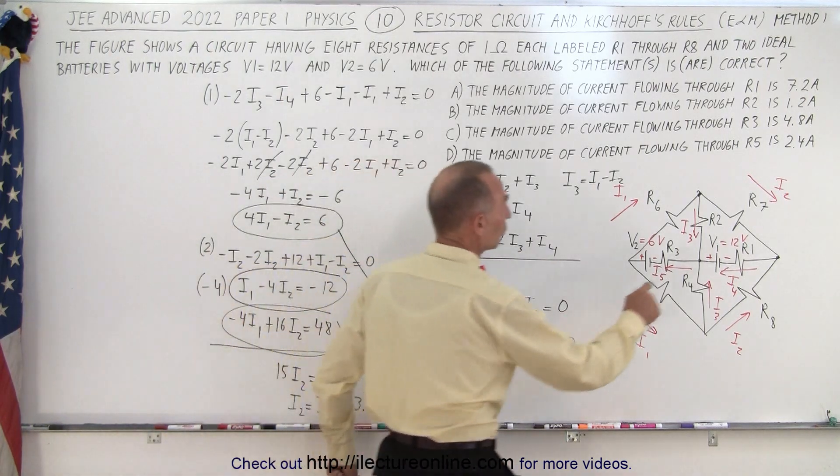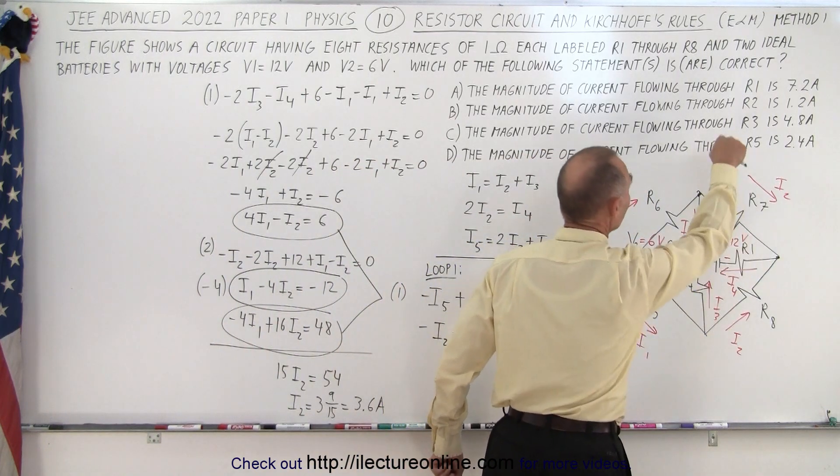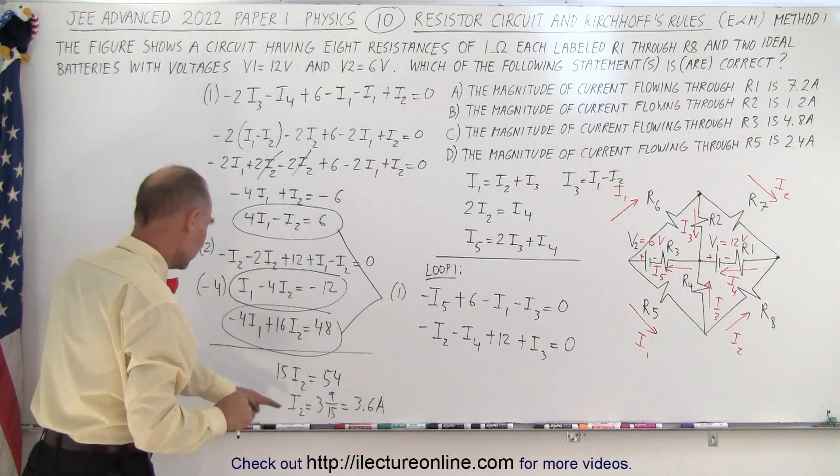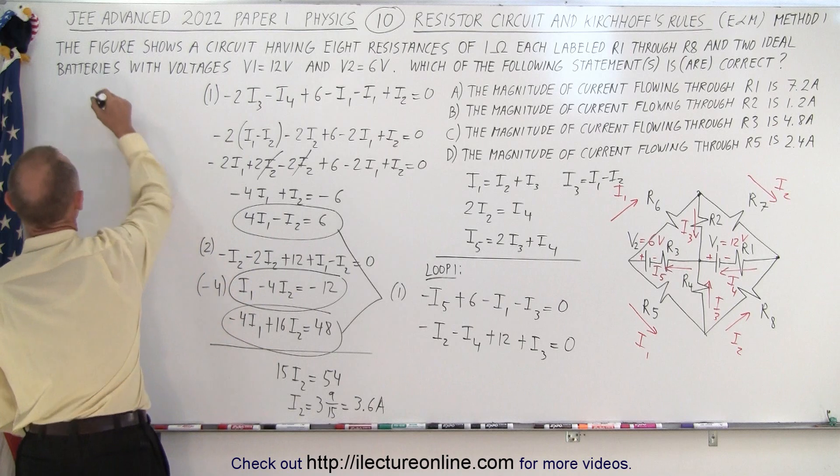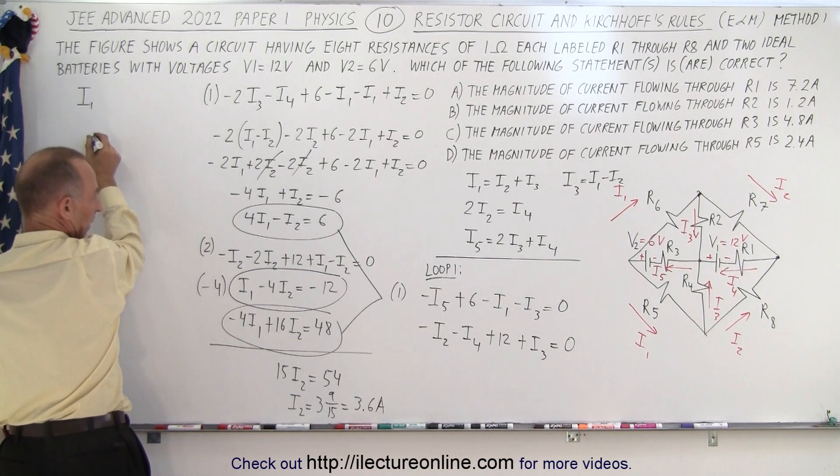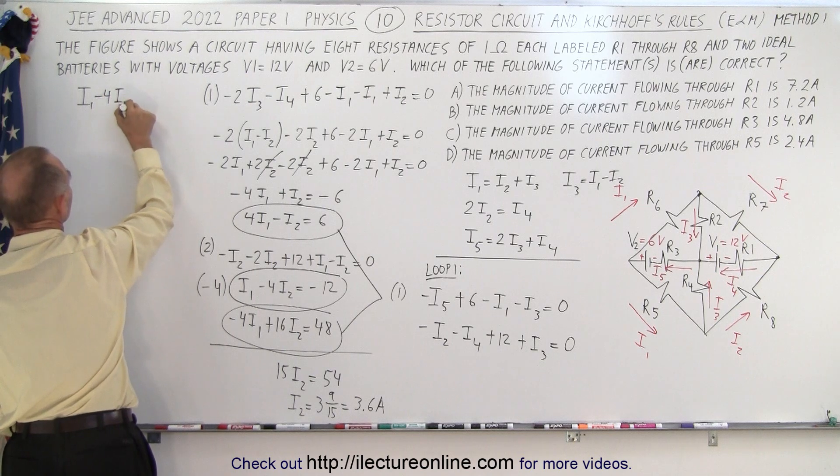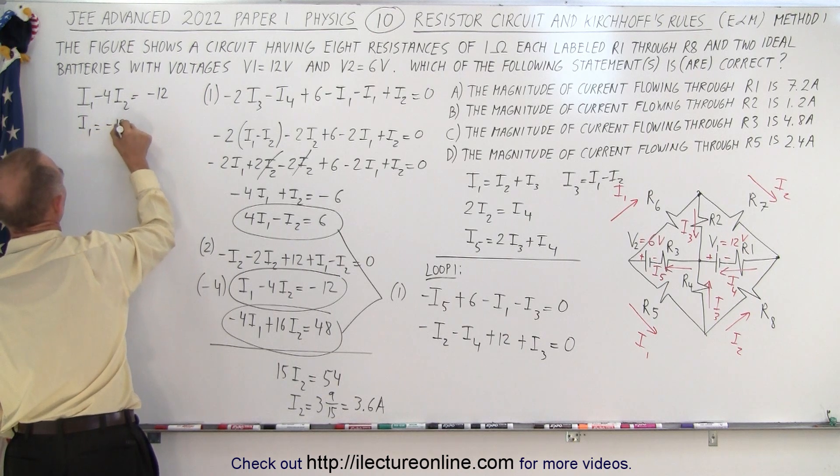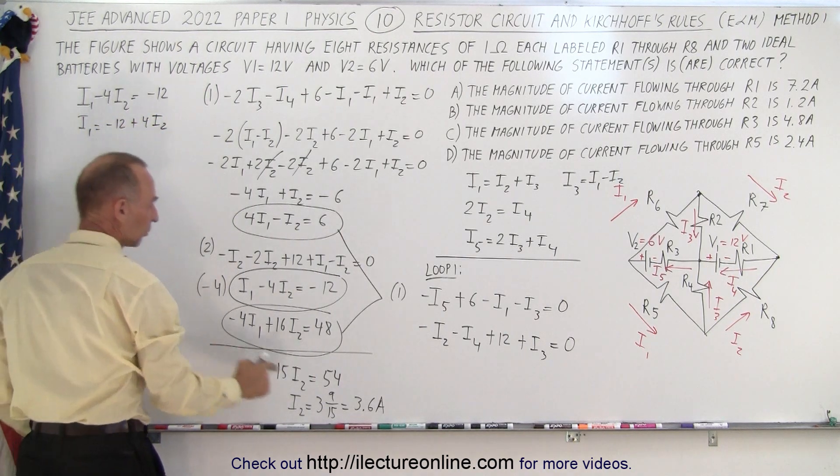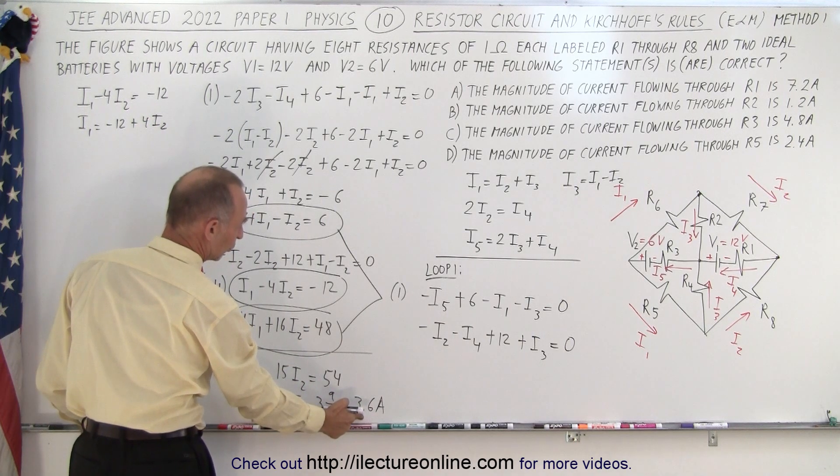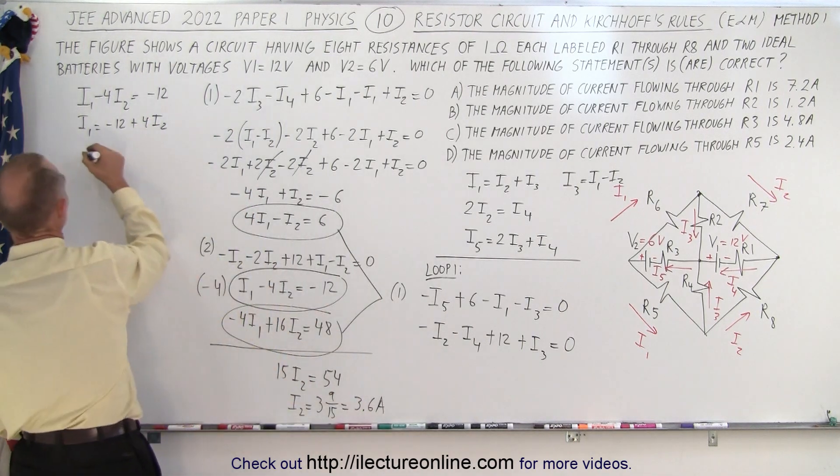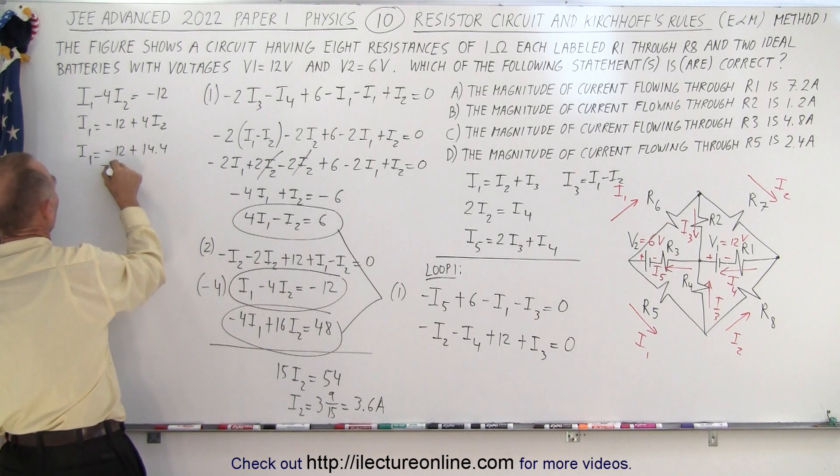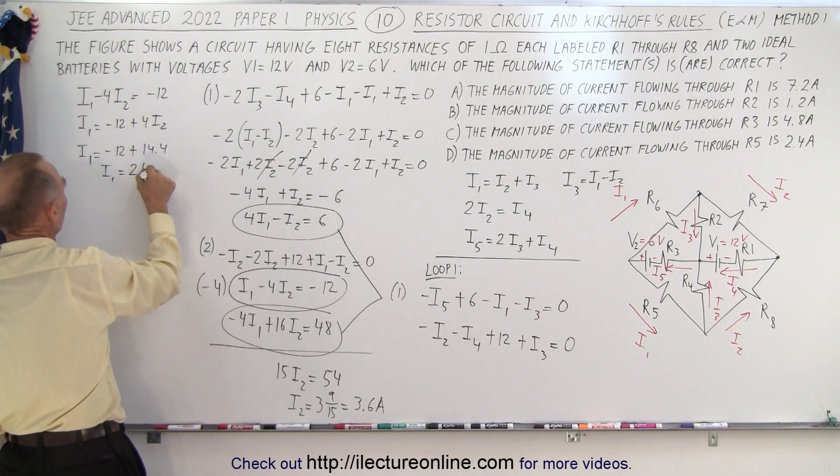Now, I2 runs through R7 and R8, which is now one of the answers, so we don't know yet if we're on the right track. But we'll now take the value for I2, plug it in here to get I1. So here we get I1 minus 4I2 equals minus 12. So, that means that I1 is equal to minus 12 plus 4I2, and I2 is 3.6, so double that, that's 7.2, double that, that's 14.4. So we have I1 equals minus 12 plus 14.4, so I1 is equal to 2.4 amps.